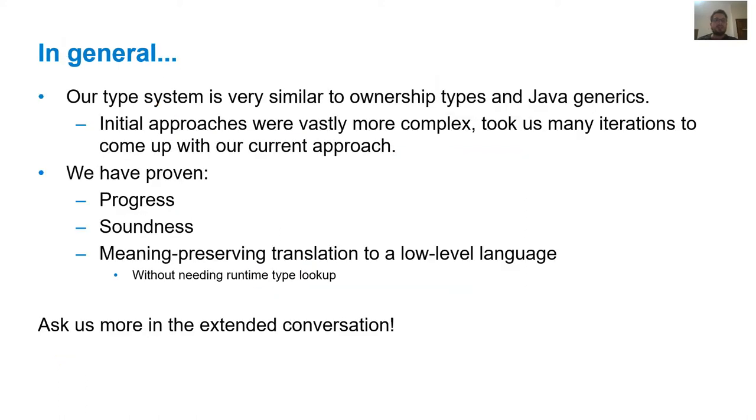In general, our type system bears quite a lot of resemblance to ownership types and Java generics. Our initial approaches to addressing homogeneity were rather complex, and there was always yet another corner case that forced us back to the drawing board. It is actually rather surprising that we ended up with a simpler approach. Additionally, in our paper, we have proven that Shapes guarantees progress, soundness, and it is possible to translate it into a low-level language in a meaning-preserving manner, and without having to keep track of runtime type information at all. We'd be more than welcome to take any questions you might have during the Q&A or the extended discussion.